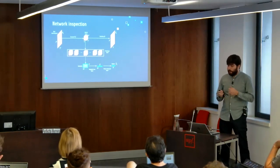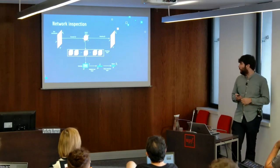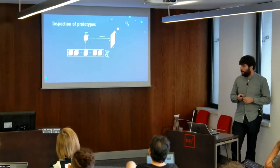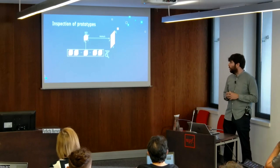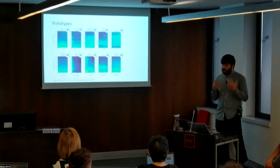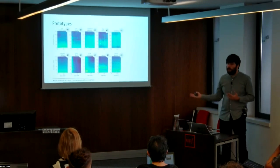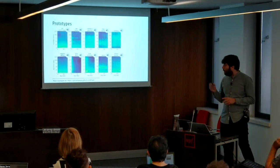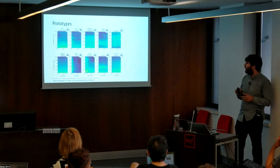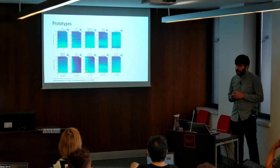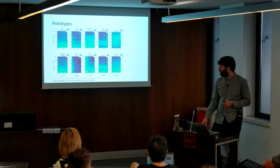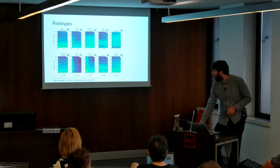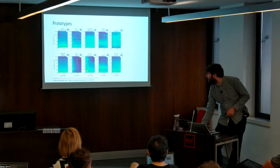We can inspect different parts of the network. First, note that the prototypes can be converted to the input representation using the decoder function, so we can visualize the prototypes as mel spectrograms. It can be noticed that the mel spectrograms exhibit the typical traits of the sound classes they represent. We can also extract the audio signal from each prototype, listen to them, and confirm that the prototypes actually represent the corresponding training classes.